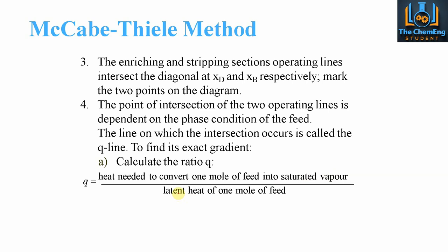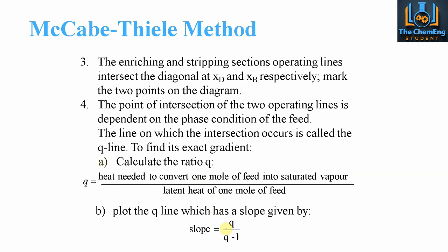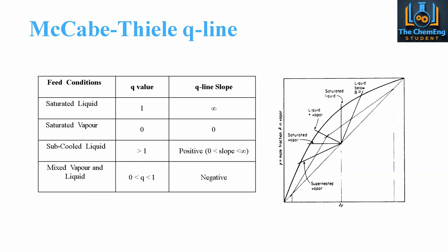We then plot the Q line, which has a slope of Q over (Q minus 1) — this is an empirical formula to remember. For a saturated liquid, Q equals 1, giving an infinite slope, so that is a straight vertical line. For saturated vapour, Q equals 0, giving a zero gradient — a completely horizontal straight line.